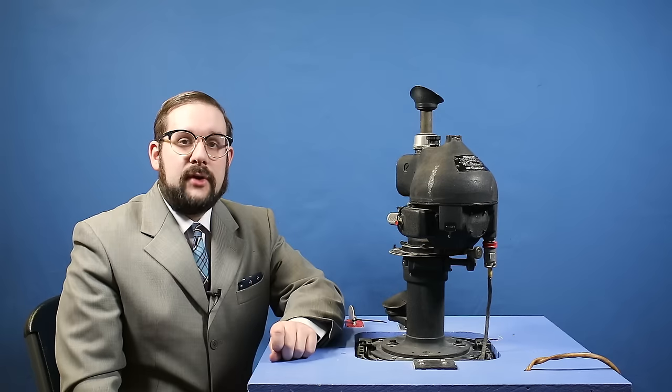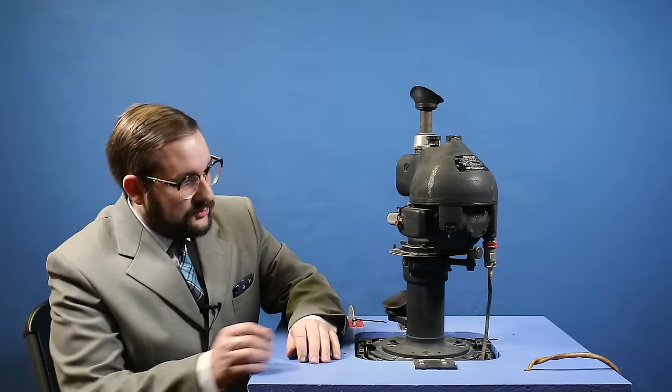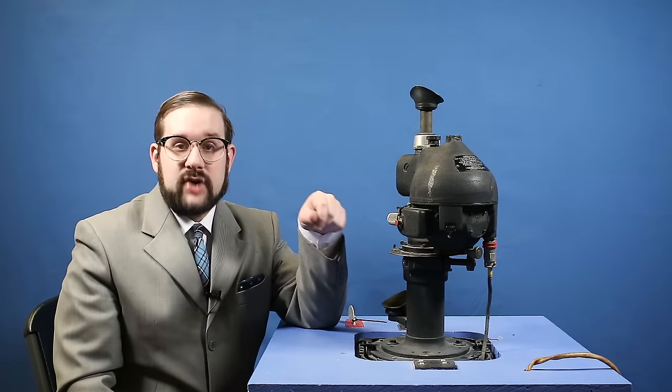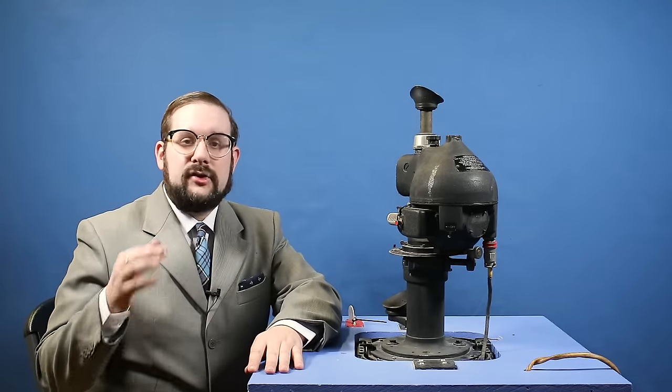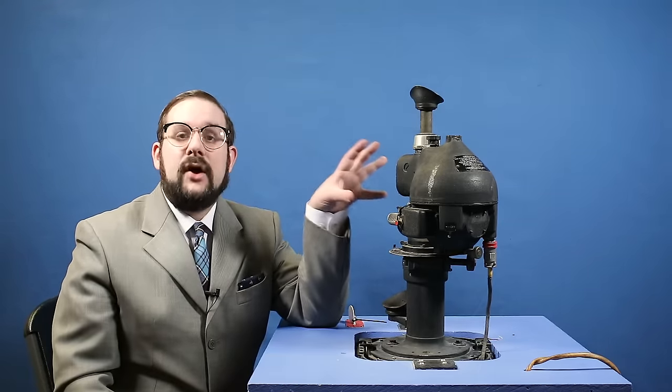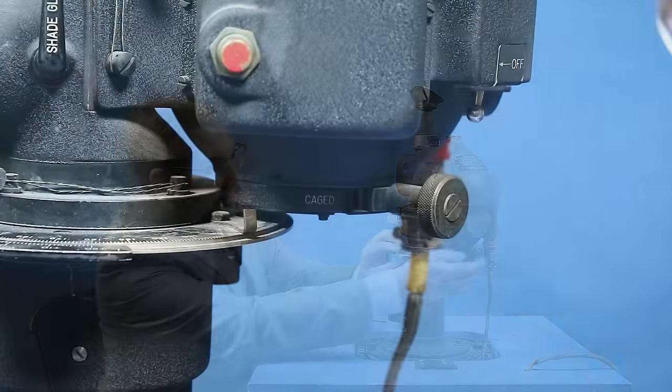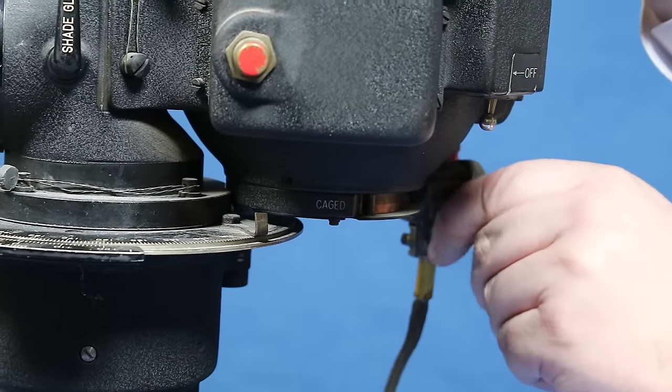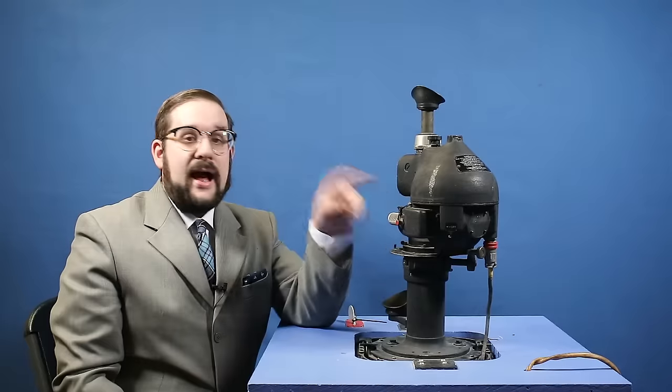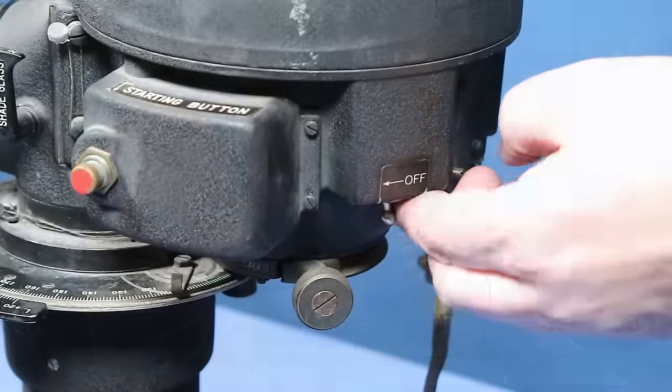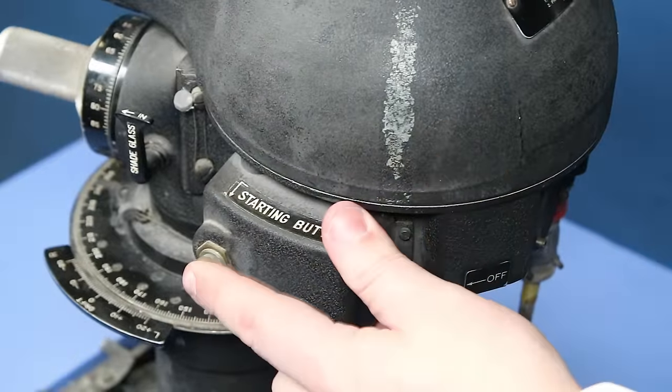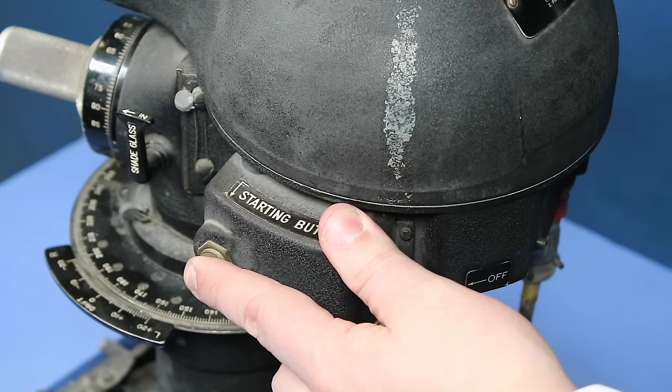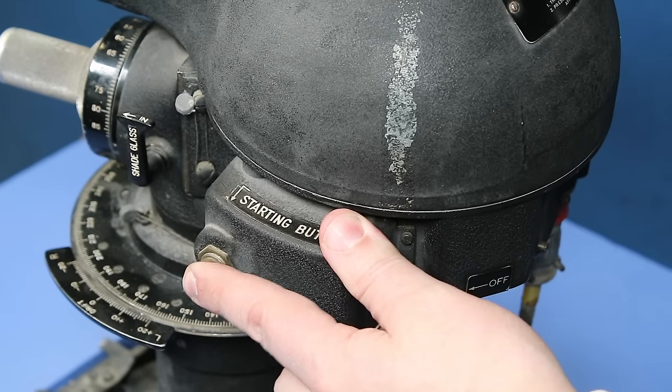So the first thing you want to do in order to use this is to uncage or unlock your gyroscope. During takeoff, landing, violent maneuvers or turbulence the gyroscope would be locked in place to protect it from damage. You unlock it by pulling out and swinging over this knob and now you can start up the gyroscope. You do this by flipping this toggle switch and then pressing and holding down the start button for around a minute which gives the gyroscope time to power up.